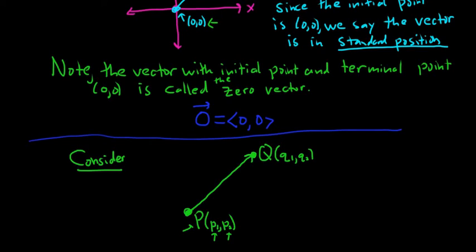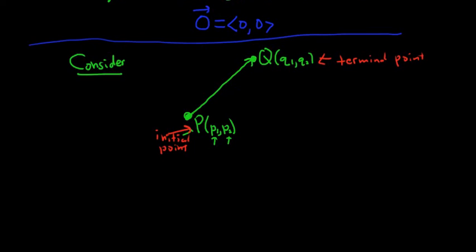So this is the initial point here. So P is the initial point, and Q is the terminal point. So we have a vector with initial point P and terminal point Q. And the idea is this.